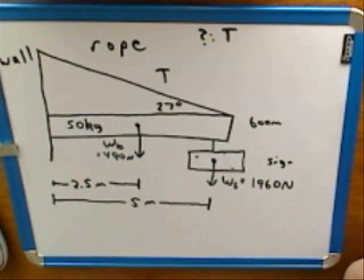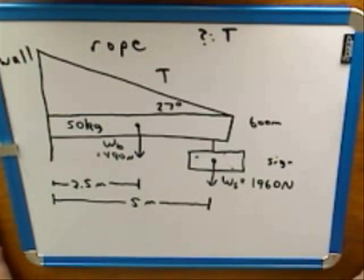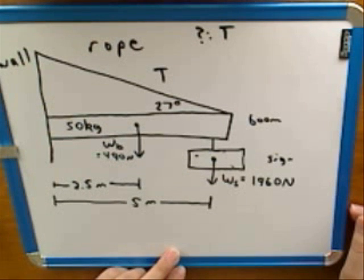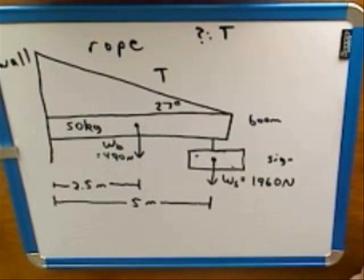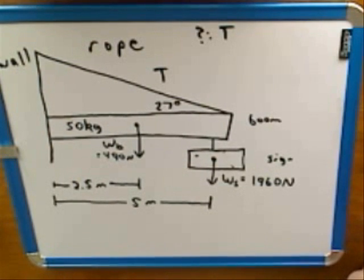How do you find all the forces on an object? First, everything has a weight, which we've taken into account. Then you ask: what external things are touching the object? The rope is touching it — and we said we'd treat the rope as external because it has no mass. That doesn't mean we're ignoring it. The tension in the rope is one of the forces being exerted on the combined object.